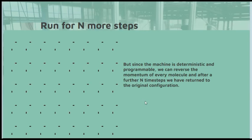On the other hand, since our machine is deterministic and since it's programmable, we can reverse the momentum of every molecule and after N steps we return to the original configuration. Now this was seen as a fundamental problem in Boltzmann's conception. Because although he had shown time moved forward under some circumstances, it was pointed out that time could move backwards equally well.